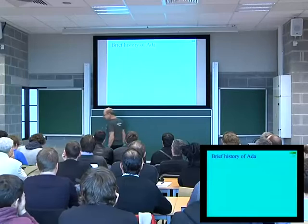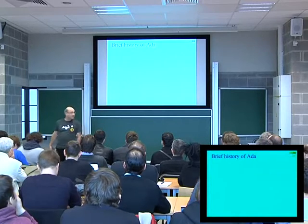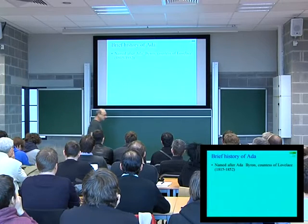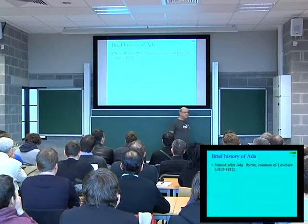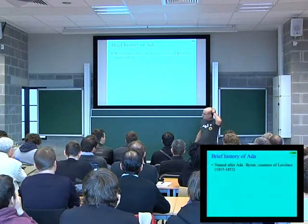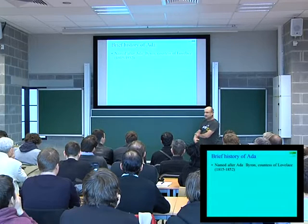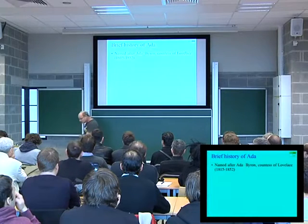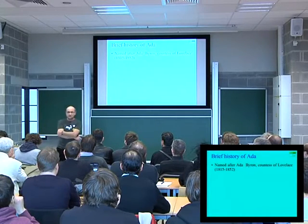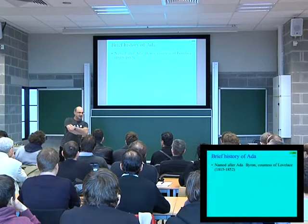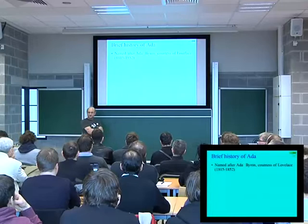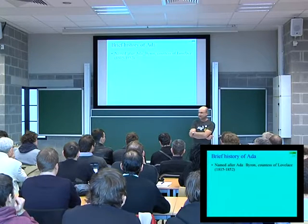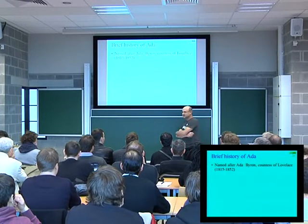Ada is named after Ada Byron, who was supposed to have been the first programmer in history. She wrote programs for Babbage's machines, and she could never run them because the machines never worked. But the programs were later recorded in PL/1 and were correct from the start — so the first program in history had no bugs, and the first programmer in history was a lady. We've changed that since then.